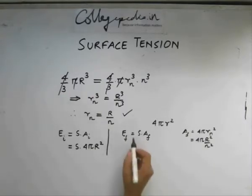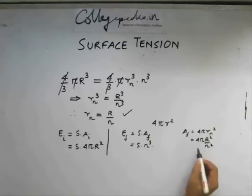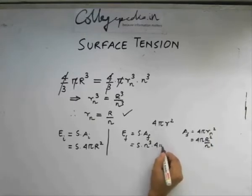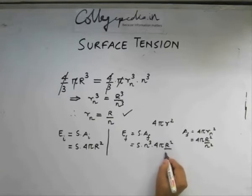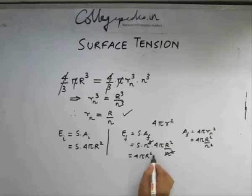The total final energy will be basically s times, we have n cube number of drops, this times the surface area of one drop, which is 4 pi r square by n square. So this cancels off with n square over here. So what we get is the final energy being 4 pi r square times s times n.